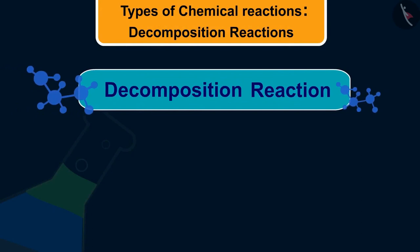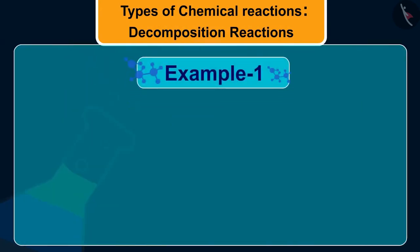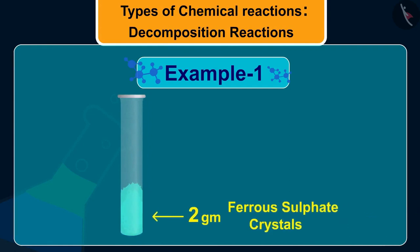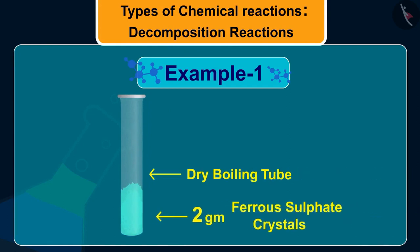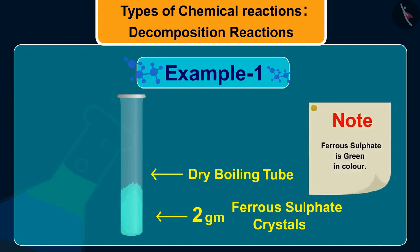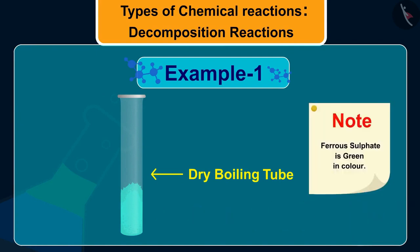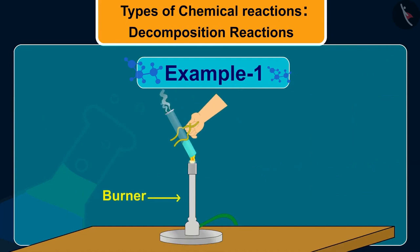Let us take an example of decomposition reaction. Take about 2 grams of ferrous sulfate crystals in a dry boiling tube. Note the color. Now, heat this and observe the color of crystals after heating.